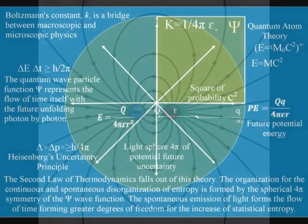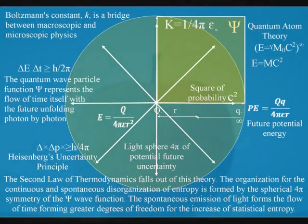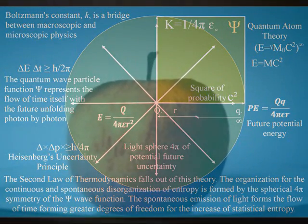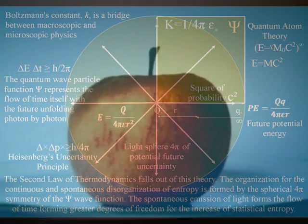Photon energy cascades down, forming greater degrees of freedom for the disorganization of entropy that we have in the second law of thermodynamics.